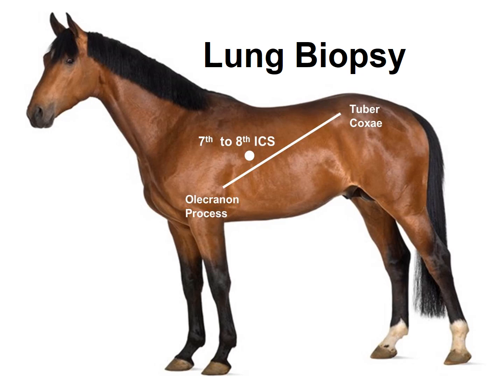To summarize: the liver biopsy is done on the right-hand side in the 12th to the 14th intercostal space, in an area between two lines — the first from the olecranon process to the tuber coxae, and the second from the point of shoulder to the tuber coxae. The lung biopsy can be done on either side — left or right — 3 inches dorsal to a line between the olecranon process and the tuber coxae, at the 7th to the 8th intercostal spaces. These are very important procedures, and the spur vein is also very important.